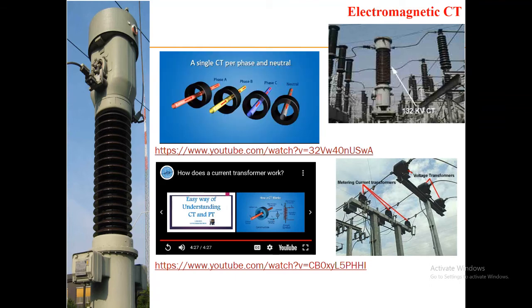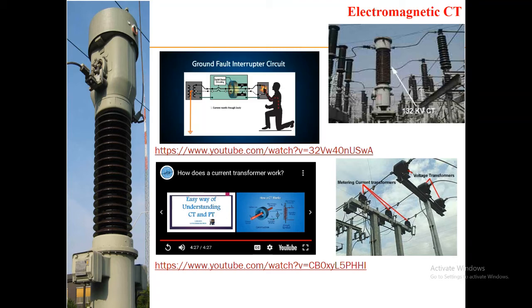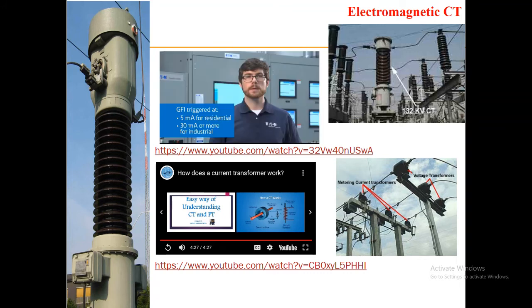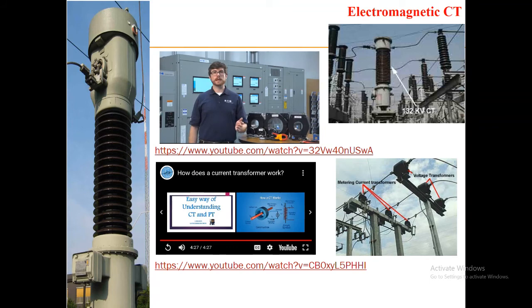A single CT is generally needed for each phase and neutral to monitor current. But for ground fault protection, a special type of CT is used. All of the phases and neutral conductors go through the ground fault CT, and if any residual current exists, in other words current comes in on one of the phases but doesn't return on the other phases or neutral, then there is a ground fault. In your house, this is triggered by a 5 milliamp level, and in industrial applications this may be 30 milliamps or even a couple hundred amps. Ground fault protection is generally for personnel safety in homes and equipment protection in industrial applications.